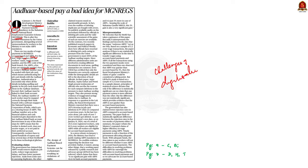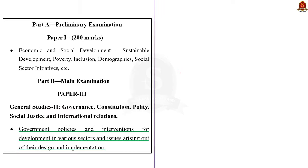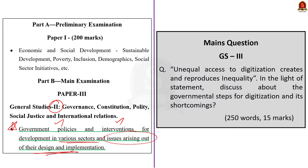In our discussion, we will understand the digitalization process in India through a mains answer writing approach. This comes under GS Paper 2 under the topic of government policies and interventions for development in various sectors and issues arising out of their design and implementation. The question is: 'Unequal access to digitalization creates and reproduces inequality. In the light of this statement, discuss the governmental steps for digitalization and explain its shortcomings.' We have to mention the various schemes taken by government regarding digitalization, list the challenges, and in conclusion suggest steps to improve digitalization in India.